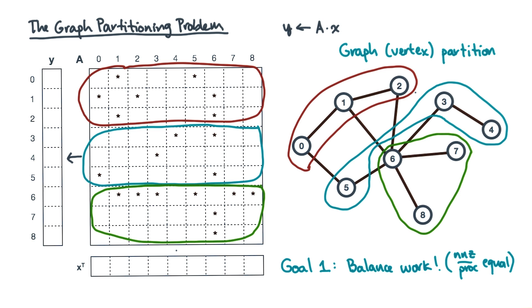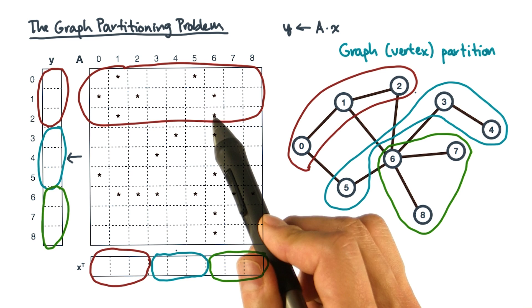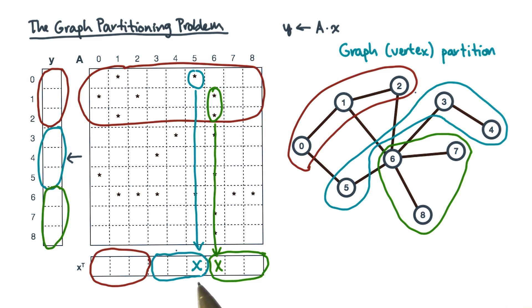Now, you have another goal in choosing a partition. Recall that the vertex x is partitioned. Suppose you want to update the first block of y. Because of these non-zeros, you're going to need these corresponding elements of x. That requires communication with the processes that own these elements of x.